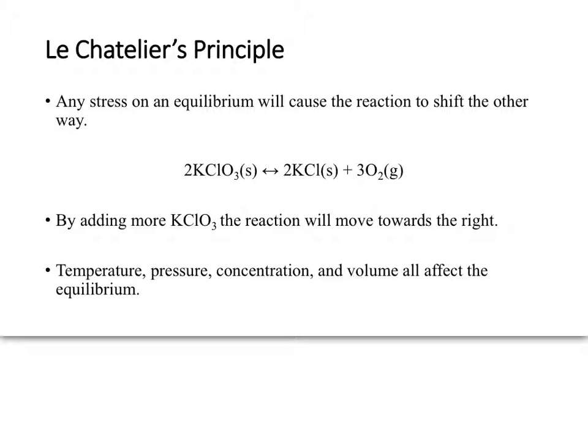Le Chatelier's principle is a fancy way of saying that when reactions are in equilibrium, whenever you put any type of stress on that equilibrium, meaning any type of change on either side of the equilibrium, it's going to shift to relieve that stress. So, for example, by adding more KClO3, by adding more reactants, you are going to shift the reaction the other way because it's going to break down and balance out on the reactant side. So by adding more of this potassium chlorate, you are going to actually increase the rate or the amount of product that's being formed. Again, it's shifting to balance out that equilibrium.